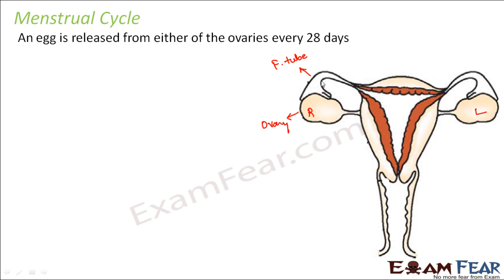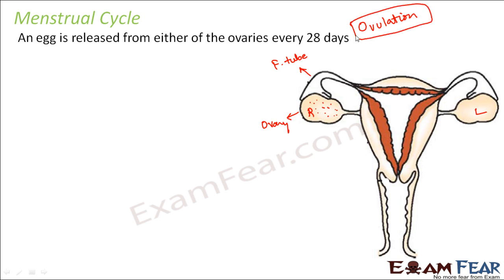This process has to happen every 28 days. Inside the ovary there are many egg cells which are present even before the baby is born. But the maturation of these egg cells starts only during puberty. From puberty, every 28 days there is one ovum which gets matured and gets released from the ovary into the fallopian tube. This process of release of an ovum from the ovary into the fallopian tube is known as ovulation.